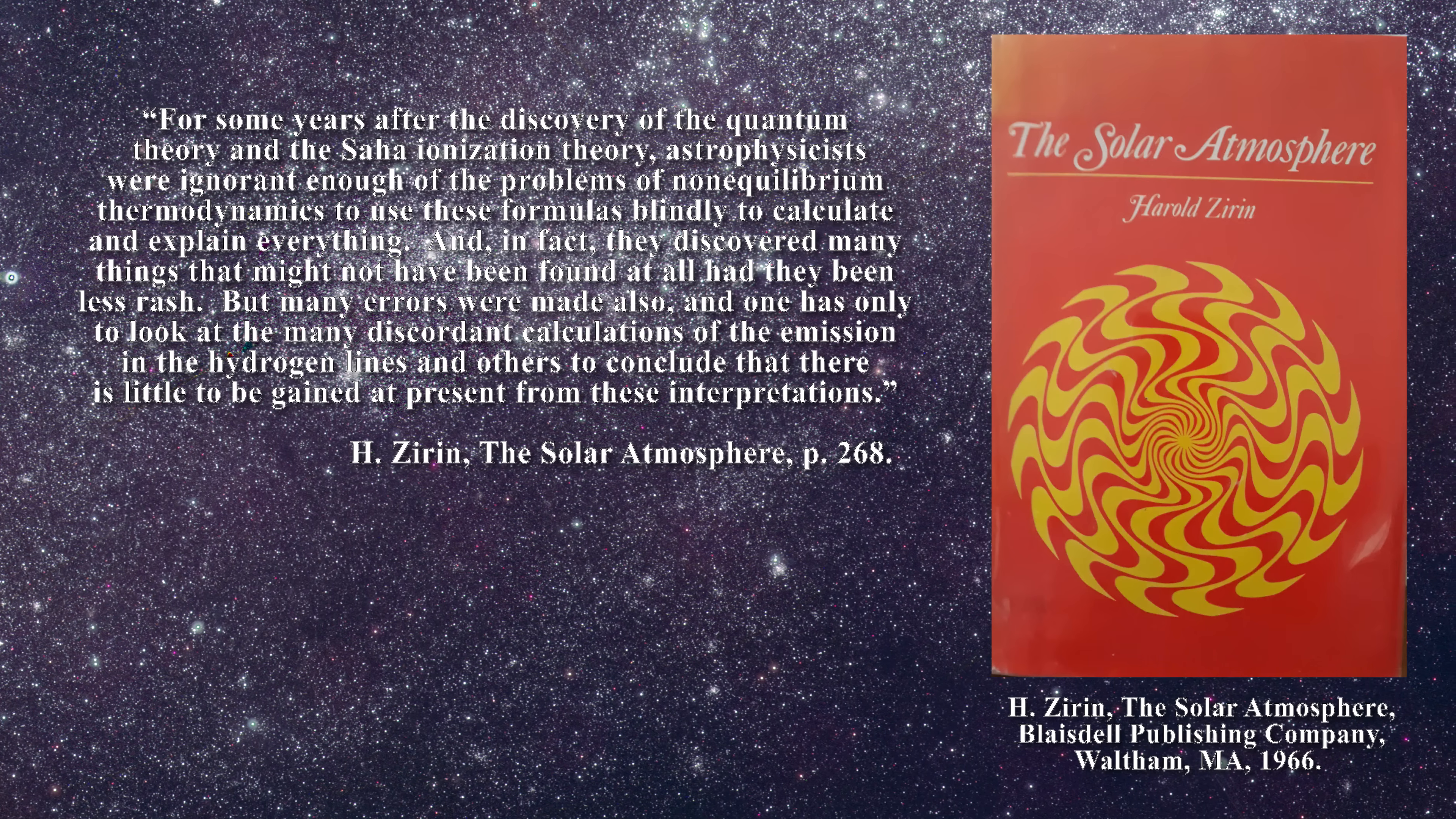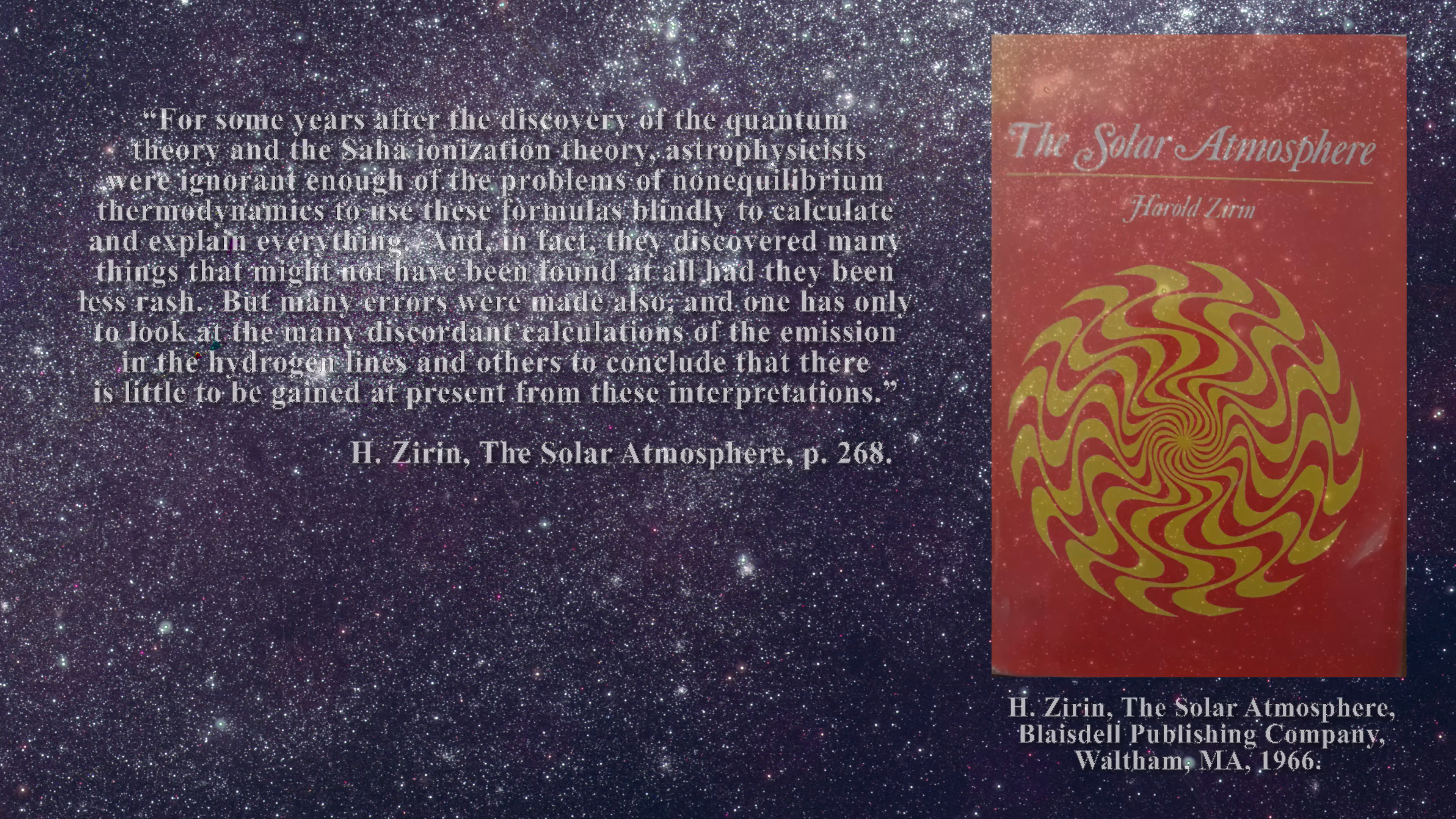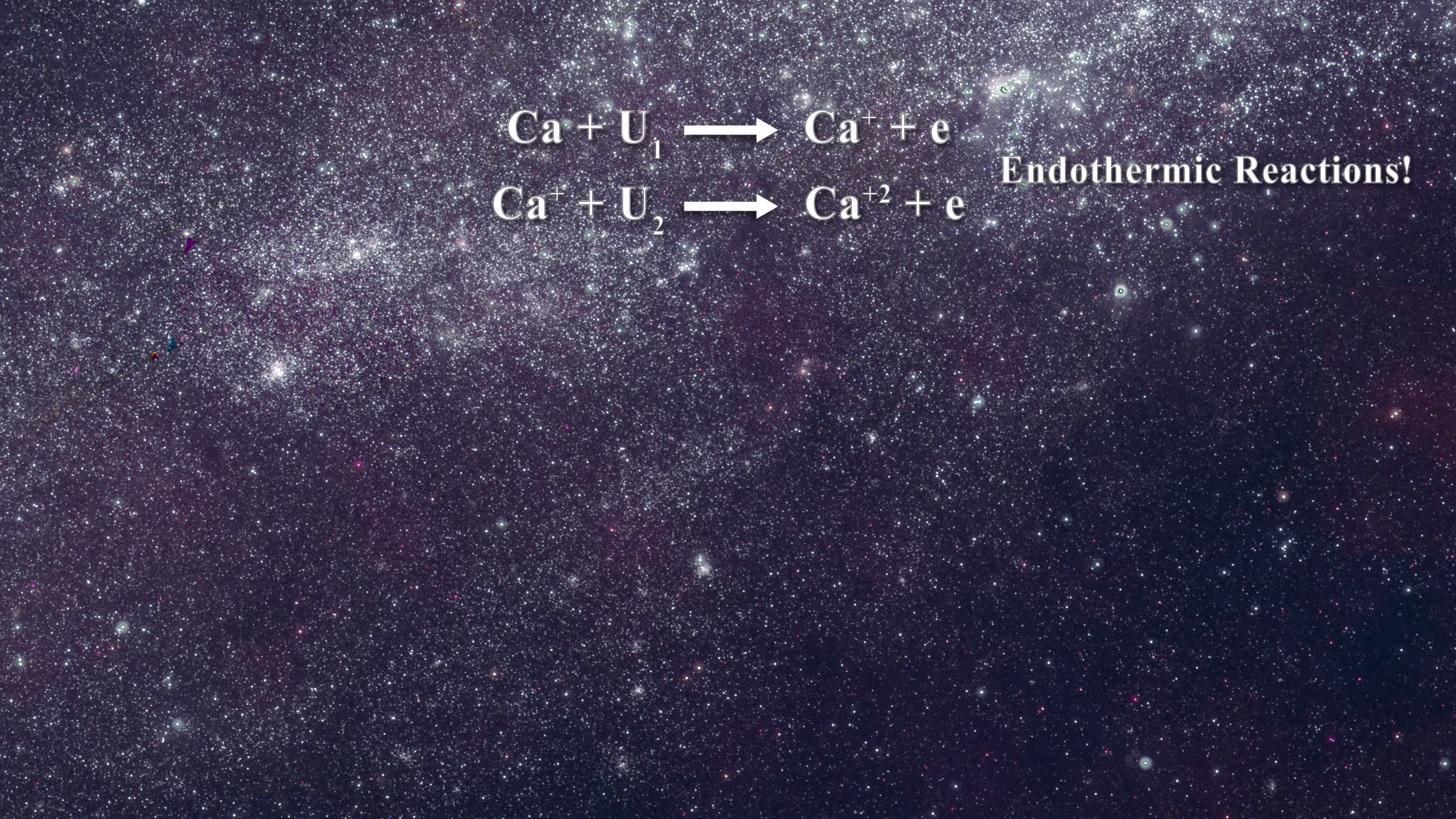Beyond the need for thermal equilibrium, another hurdle for the Saha equation and all such approaches is that the correct answer can only be obtained once the system has been properly characterized. For instance, relative to the ionization of calcium, one cannot just write down simple equations such as these. It is very likely that the situation in the chromosphere is affected by additional reactions.